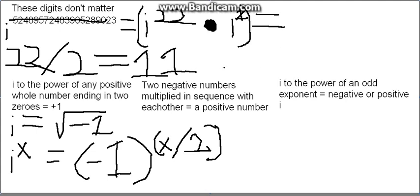And two negative numbers multiplied in sequence with each other equals a positive number.